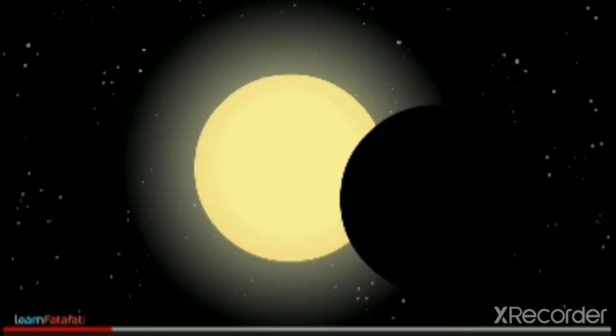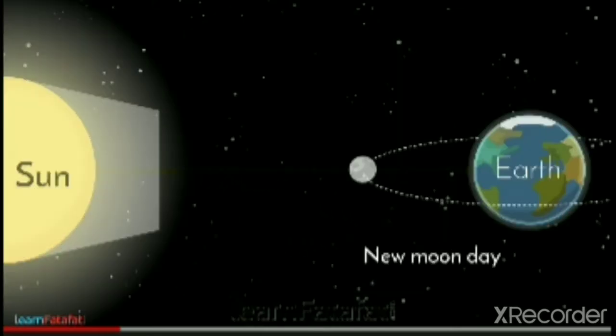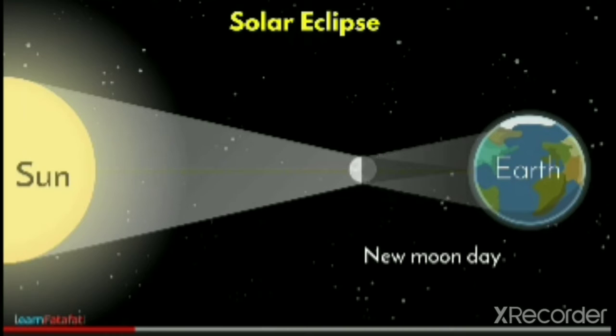It happens on a new moon day when they all come in one single straight line. The shadow of the moon falls on the Earth, and we have a solar eclipse.